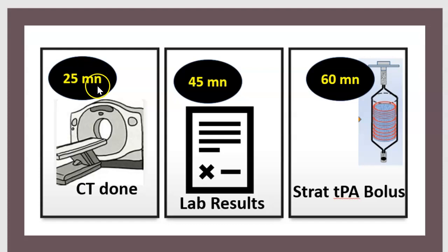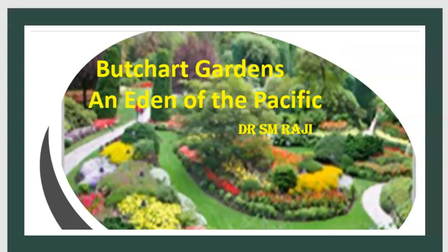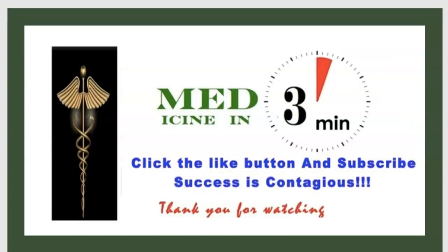Stroke is an issue of time: 25 minutes to complete CT, 45 minutes to have lab results, 60 minutes to start TPA bolus. Wallenberg syndrome — think about ischemia of PICA, the posterior inferior cerebellar artery in the medulla, and the vertebral artery. 75 minutes to administer TPA. Thank you for watching this episode of Medicine in 3 Minutes — please click like and subscribe.